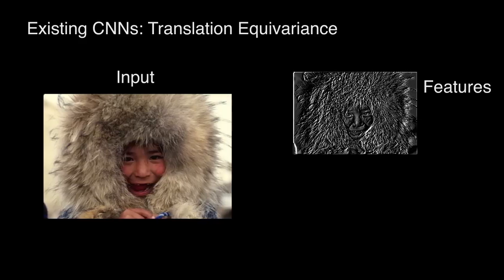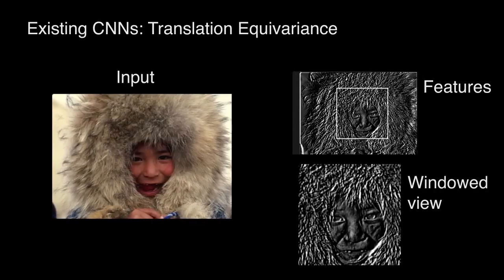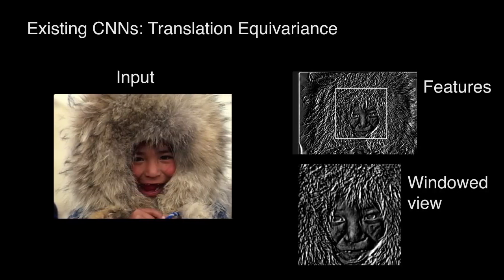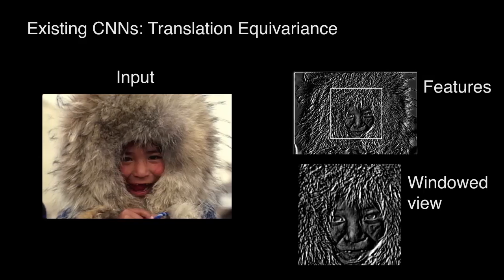Importantly, if we place a motion compensated window around the features, then we see that the form of translated features remains stable, independent of translation. This property arises by design from the translational weight-tied structure of CNNs.